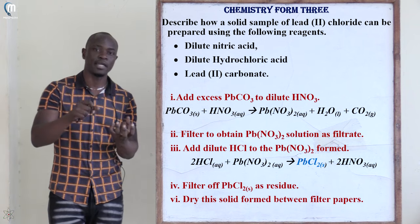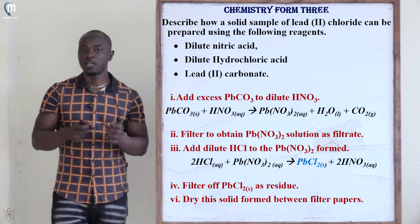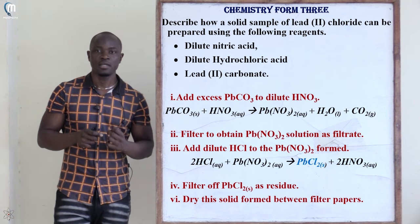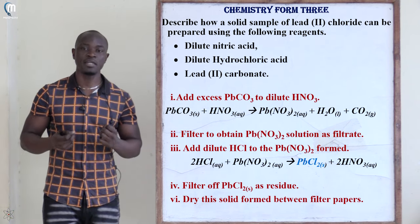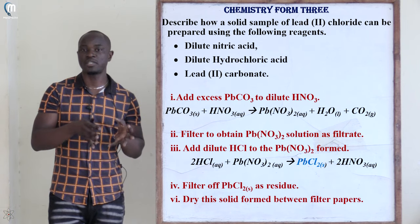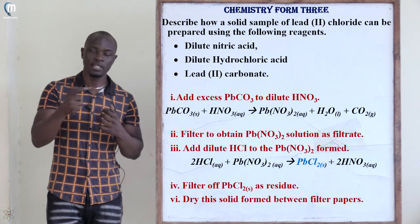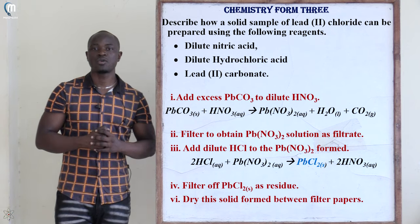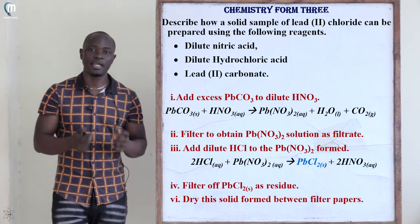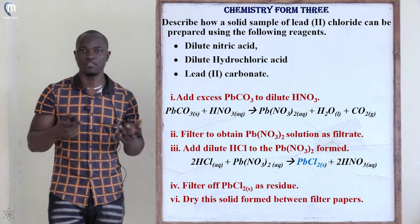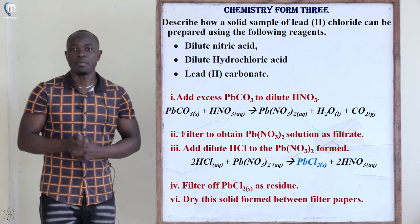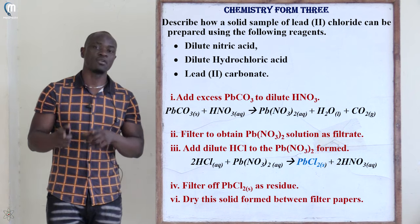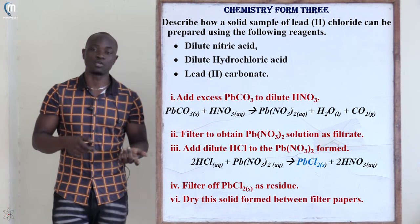After adding excess lead(II) carbonate to the nitric acid, the next step is filtration. You filter in order to obtain the filtrate — the nitric acid having reacted with the lead(II) carbonate — and to remove the lead(II) carbonate residue.